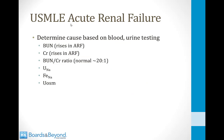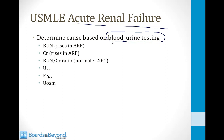For the USMLE, you'll need to diagnose acute renal failure using blood and urine testing. Key values include BUN, creatinine, and their ratio (normally about 20 to 1). You'll also use urinary sodium, fractional excretion of sodium (FENA), and urinary osmolarity.